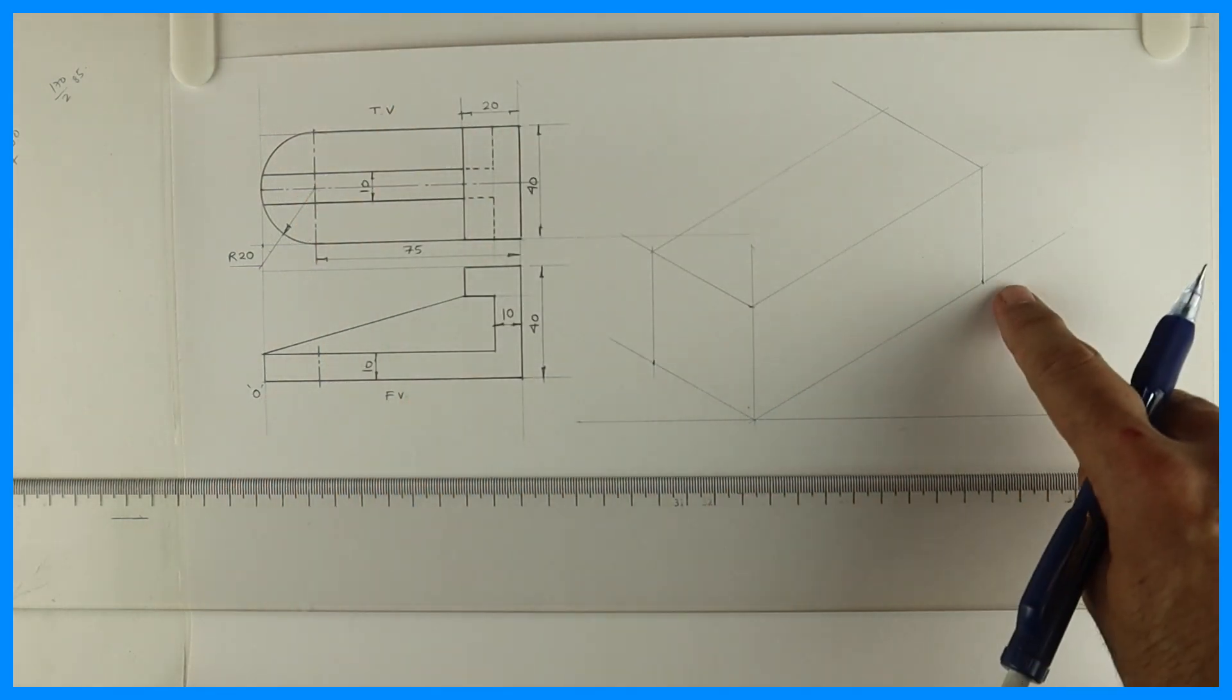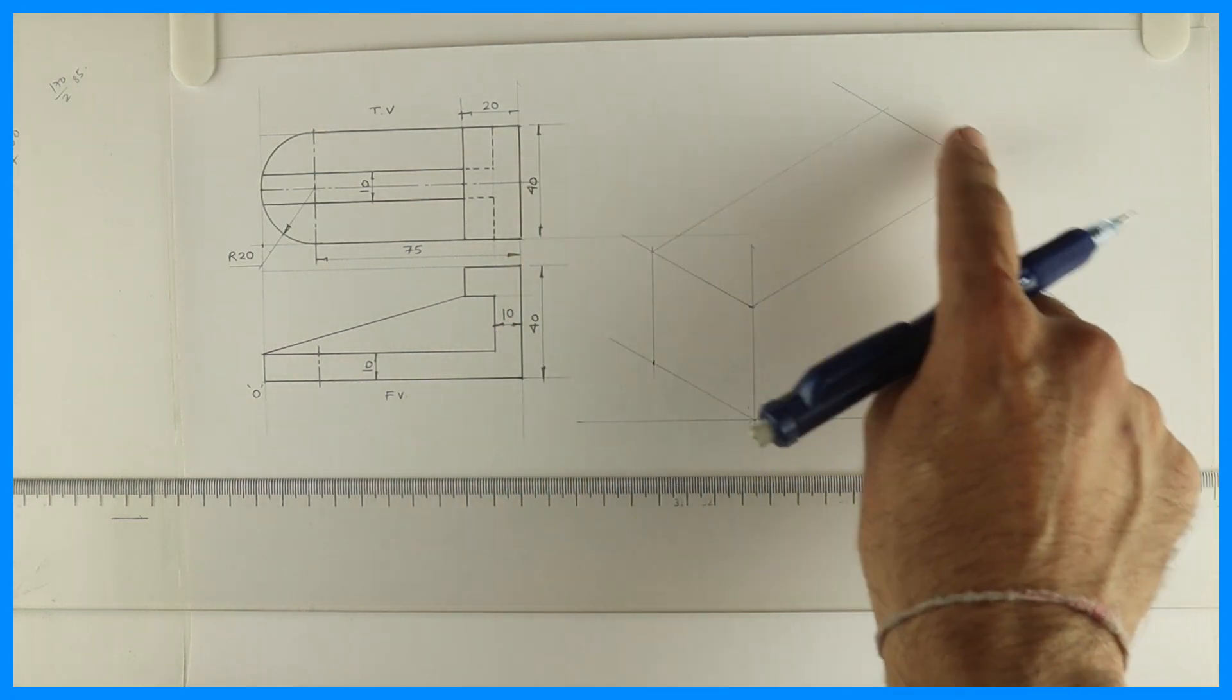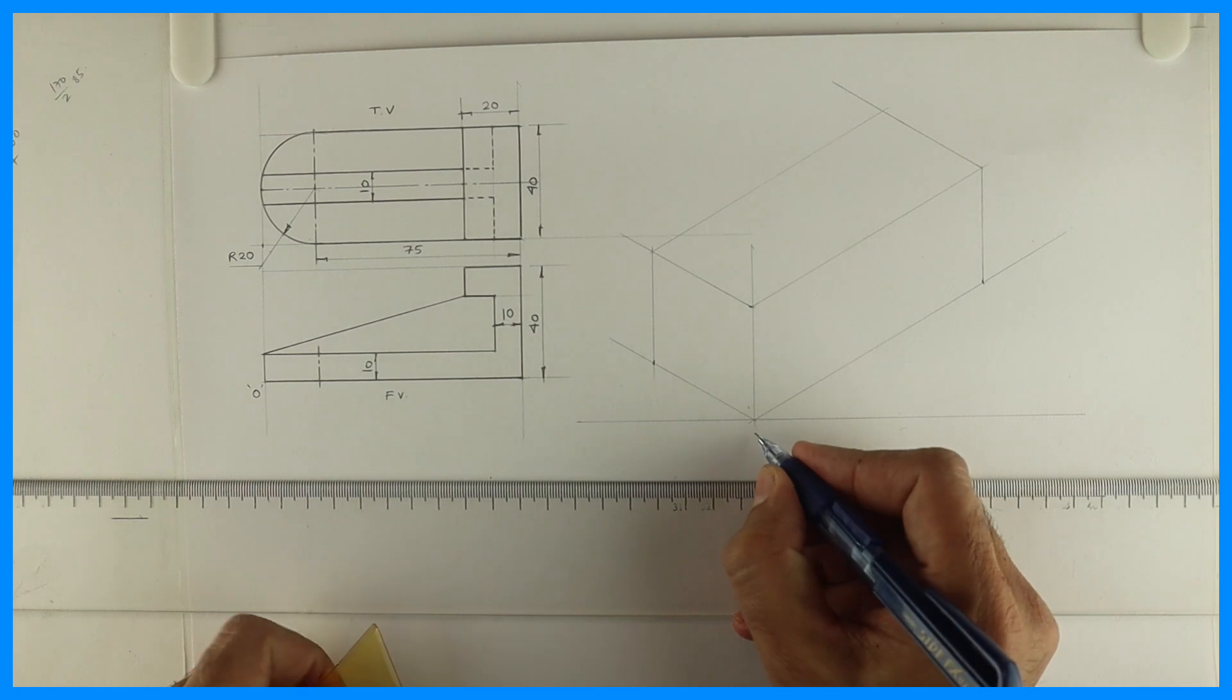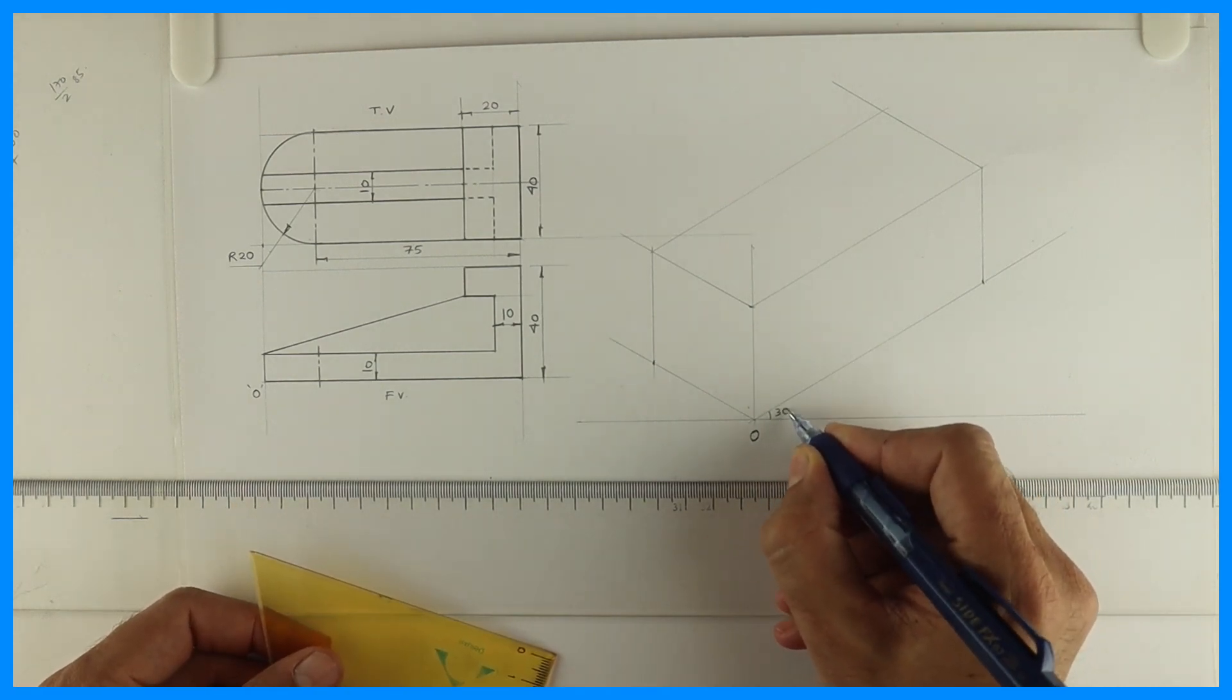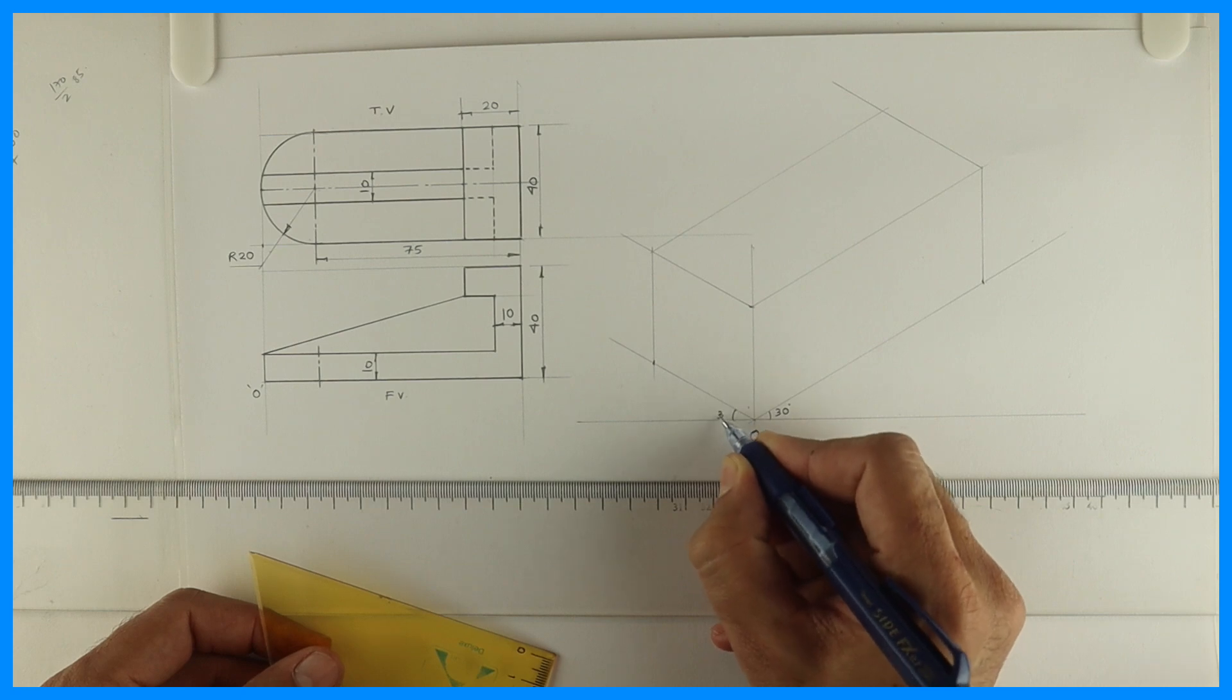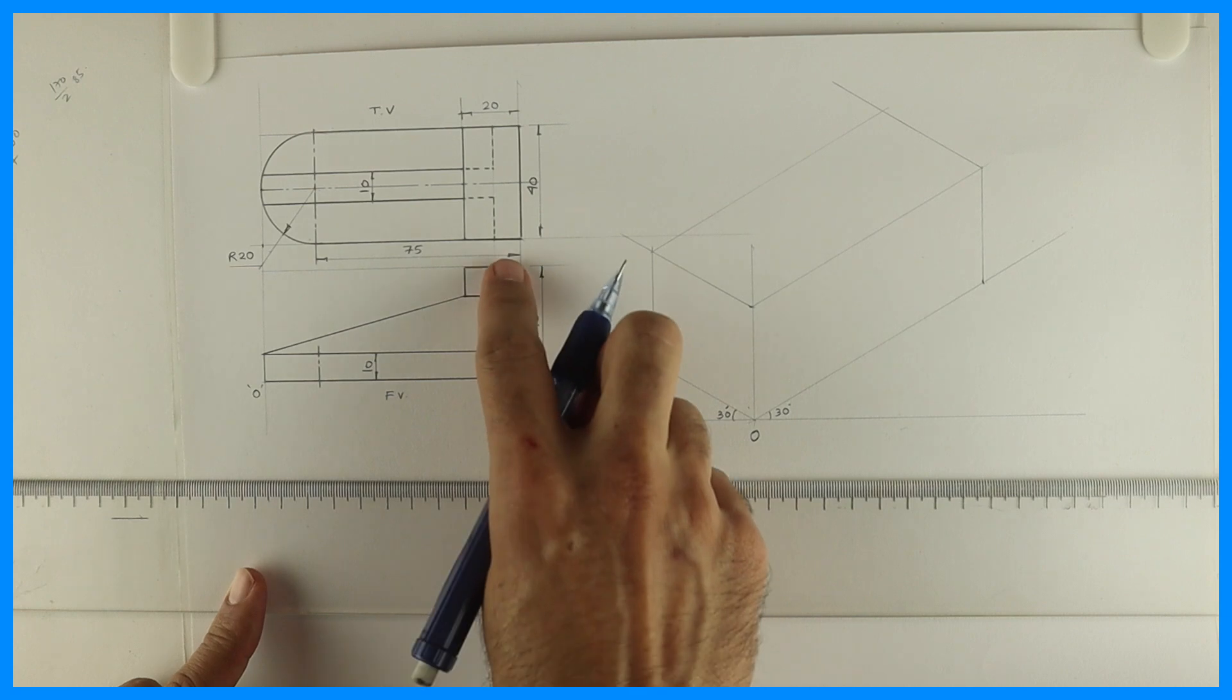Length is 95, which I will take on the right side. Height is 40 and width is 40. So first I will draw that. Let me write origin and 30-30 degree. Remember to draw layout and write origin and 30-30 degree.